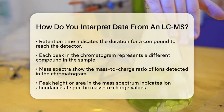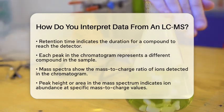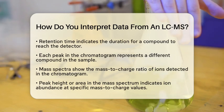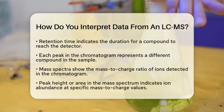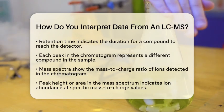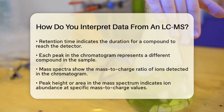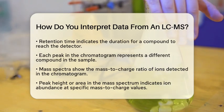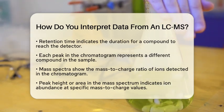To interpret the data, start by examining the chromatogram. Identify when different compounds elute from the column. Each peak's retention time can help you match it to known standards or reference data. Next, look at the mass spectrum that corresponds to each peak. The mass-to-charge values in the spectrum will help you determine the molecular weight and potential identity of the compound.